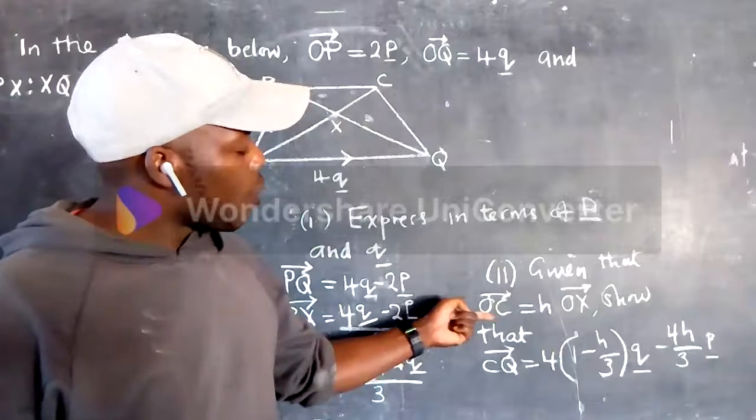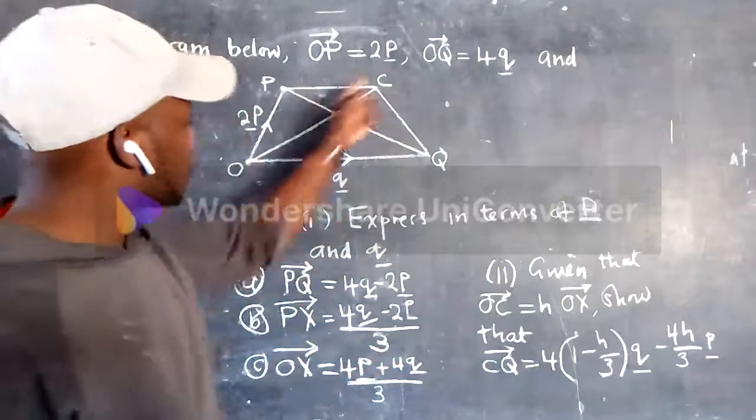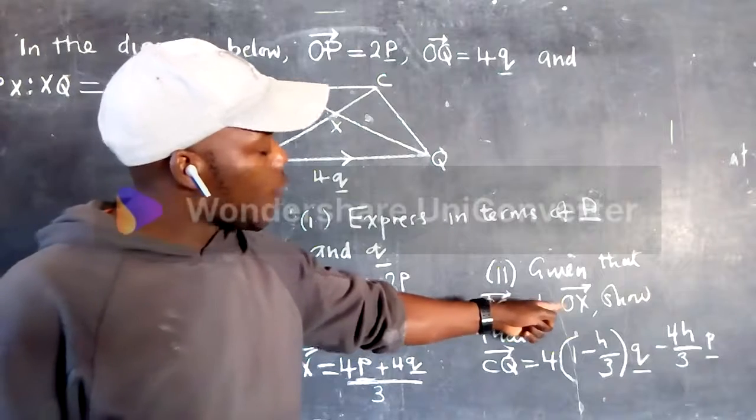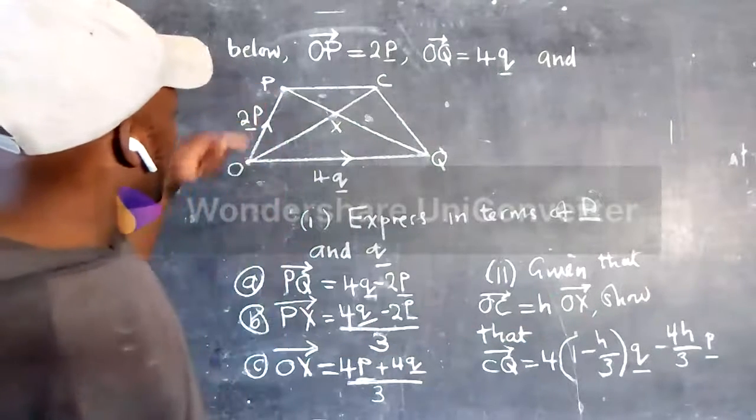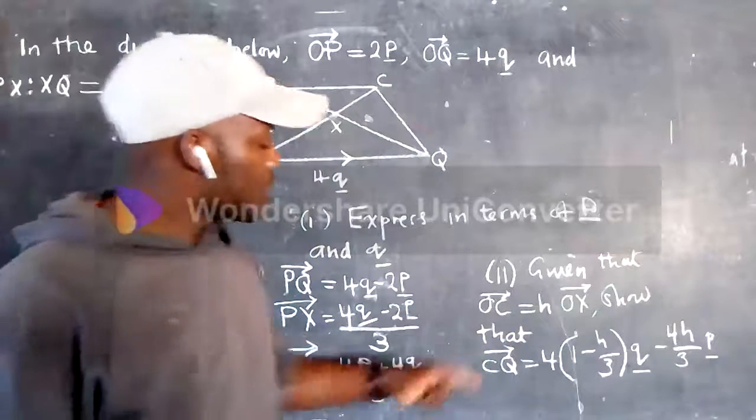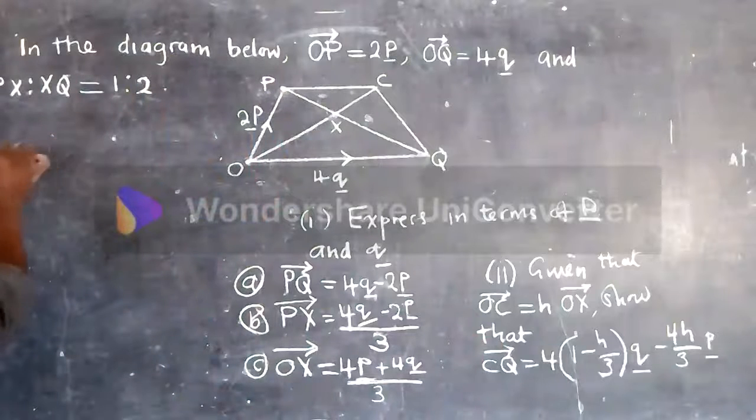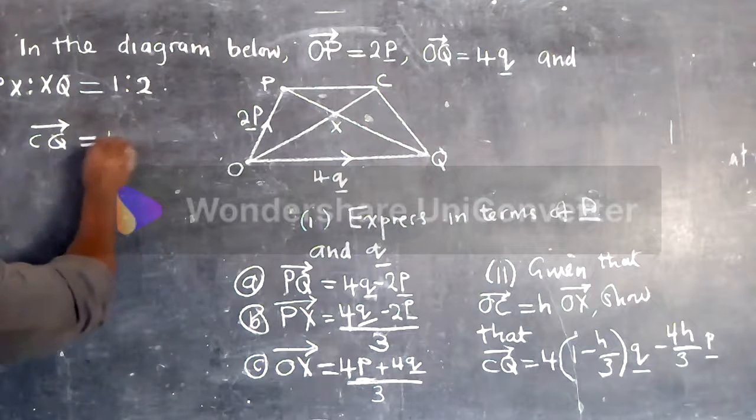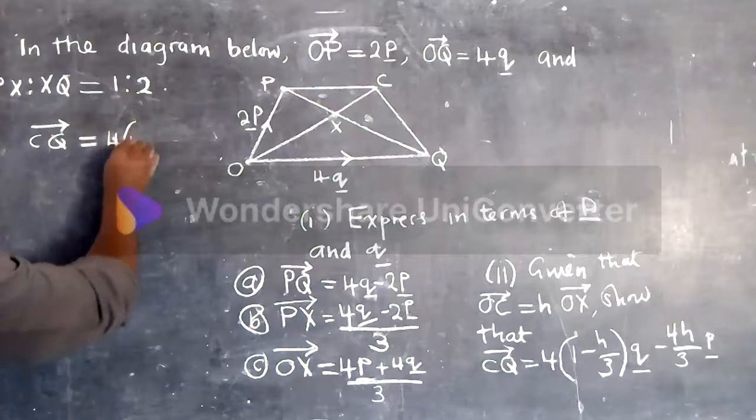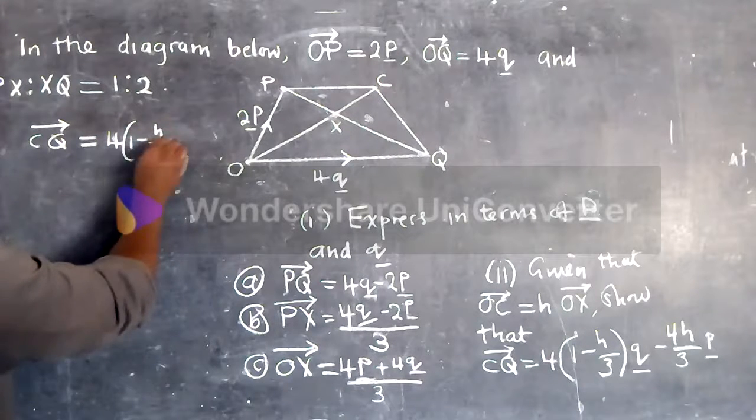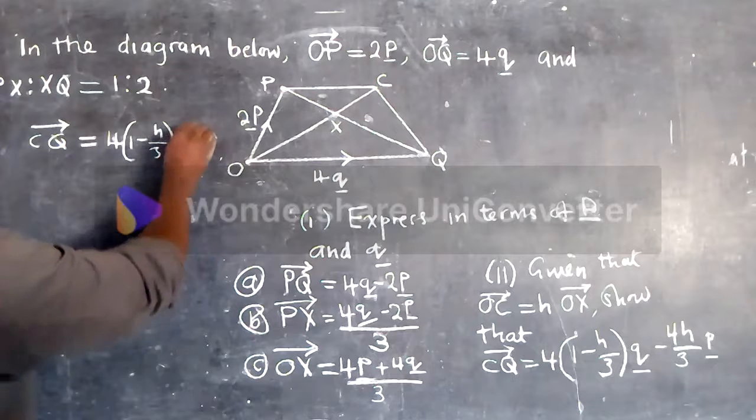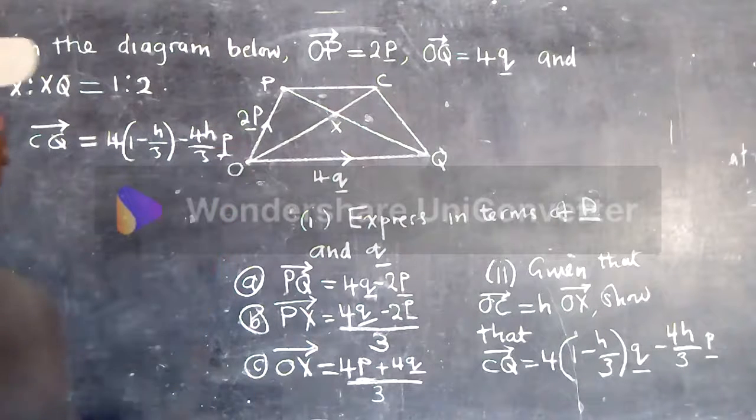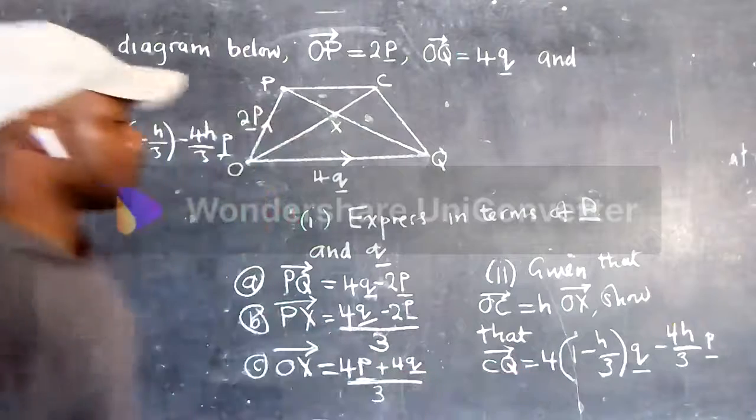Given that OC is equal to H multiplied by vector OX, show that CQ is equal to 4 open bracket 1 minus H over 3 close bracket minus 4H over 3P.